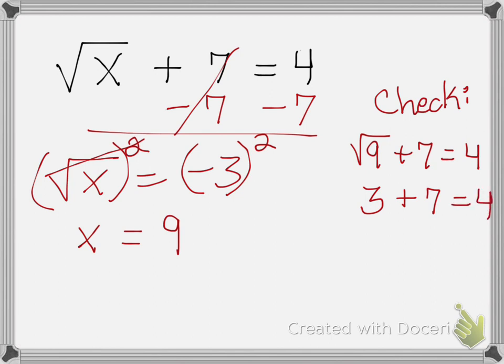And 3 plus 7, that gives me 10. But 10 does not equal 4. So, therefore, this is extraneous. And that's it!